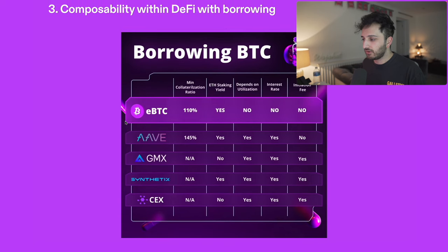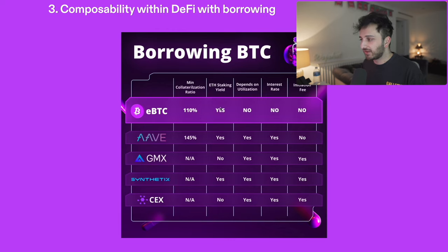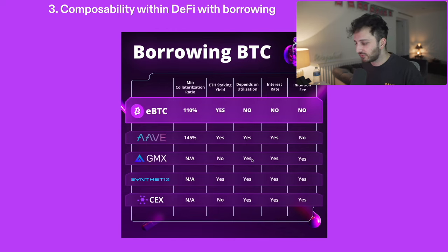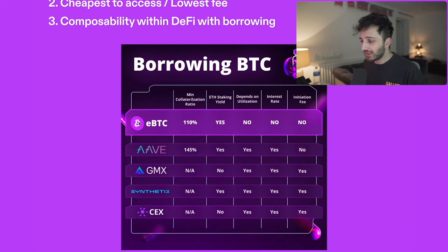I've got a chart that shows EBTC against some other popular protocols. When you're borrowing EBTC, the cost and features are actually pretty impressive compared to the likes of Aave and GMX. The minimum collateral ratio is lower. You have the ETH staking yield. It's not dependent on utilization like other money markets or perpetual exchanges. There's no interest rate and no initiation fee — this is a zero percent fee borrow. EBTC is actually competing with some of these big DeFi blue chips at the moment.